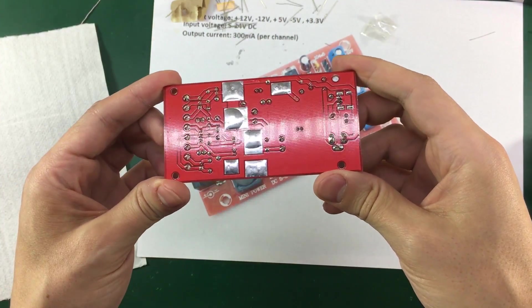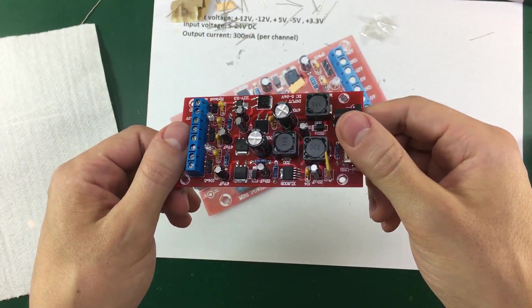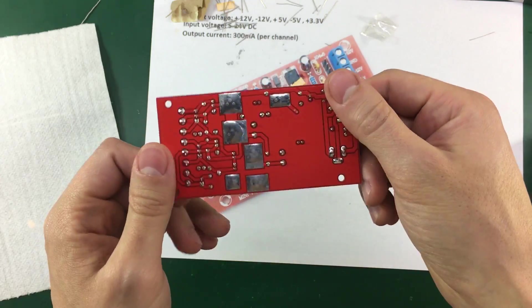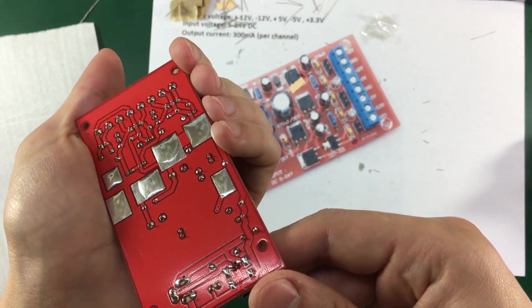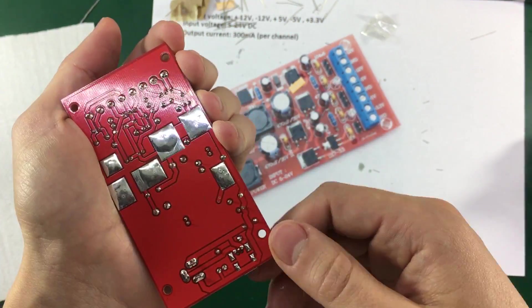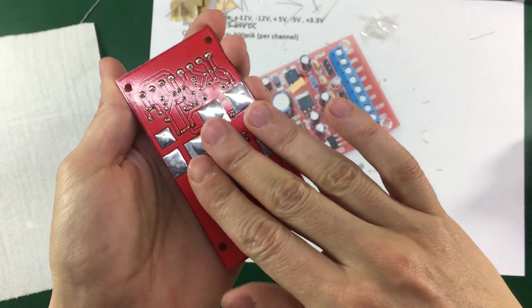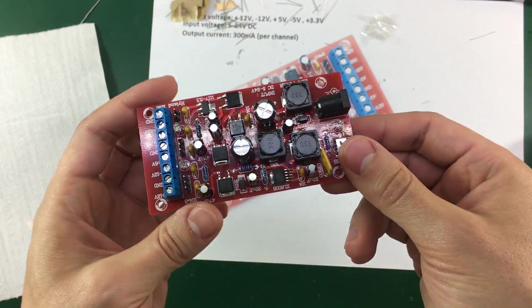So this is how the board looks like after cleaning it with water and that anti-static brush. As you can see the result is perfect, the soldering is like from an automated assembly line and there is no residue at all left on this PCB.